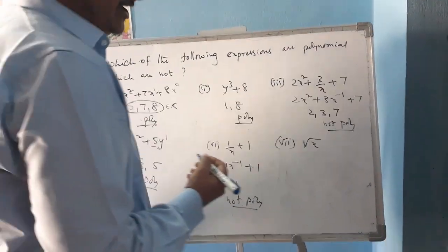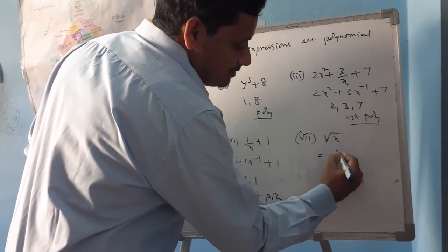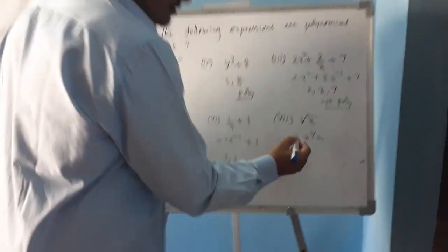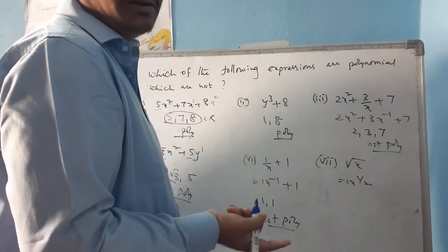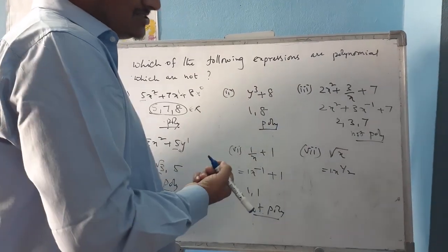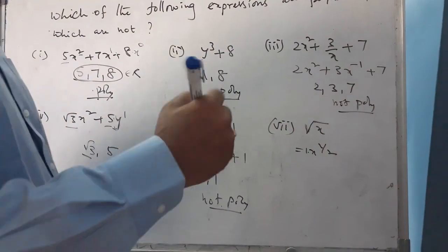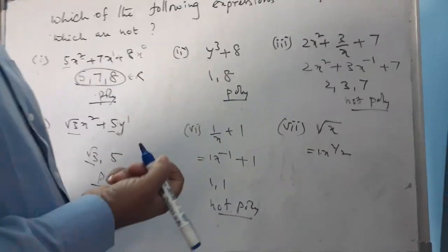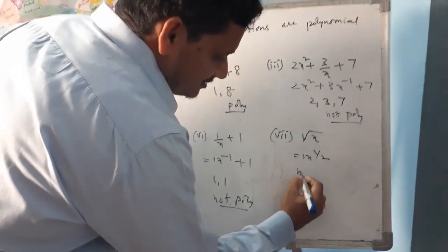For the expression √x: this can be written as x to the power of 1/2. The coefficient is 1, which is a real number. However, the power 1/2 is a fraction, and fractions are not allowed in polynomials. So this is not a polynomial.